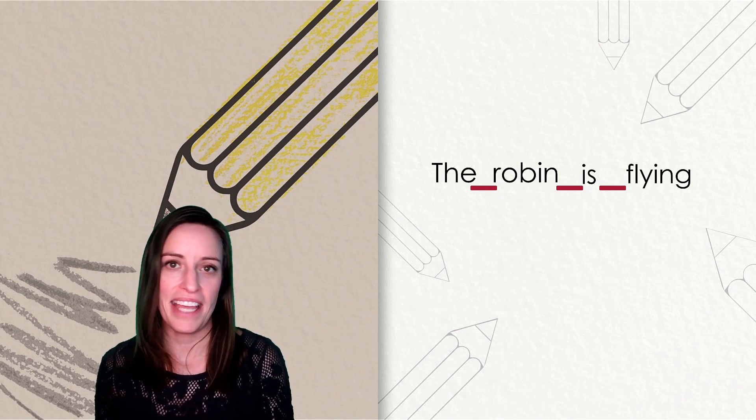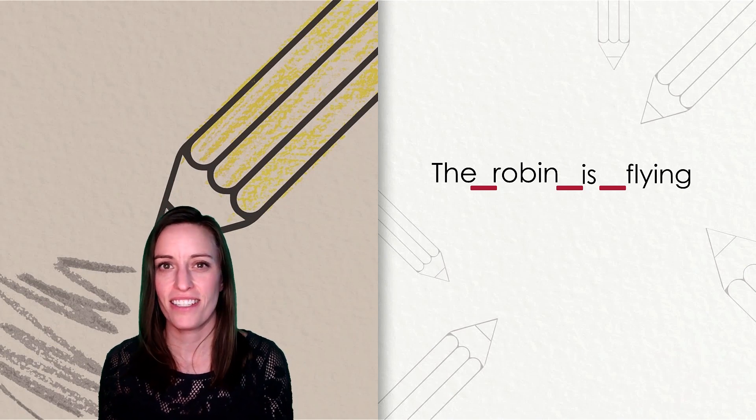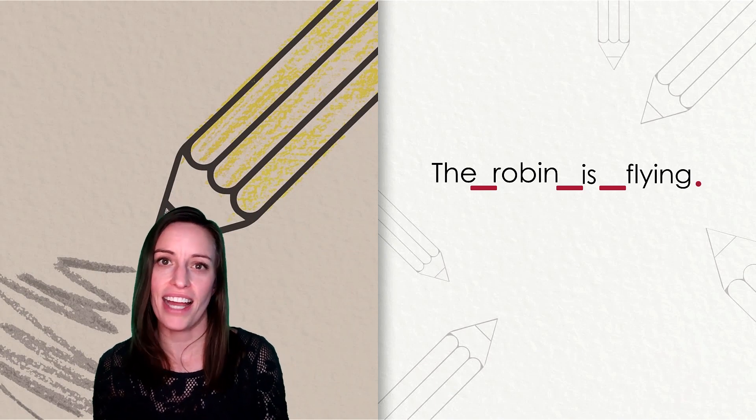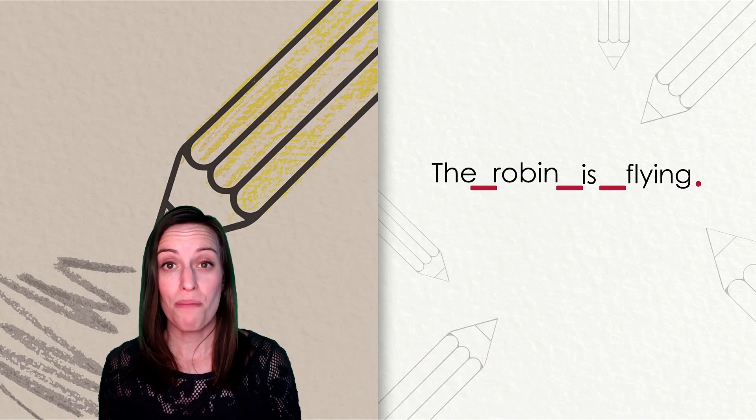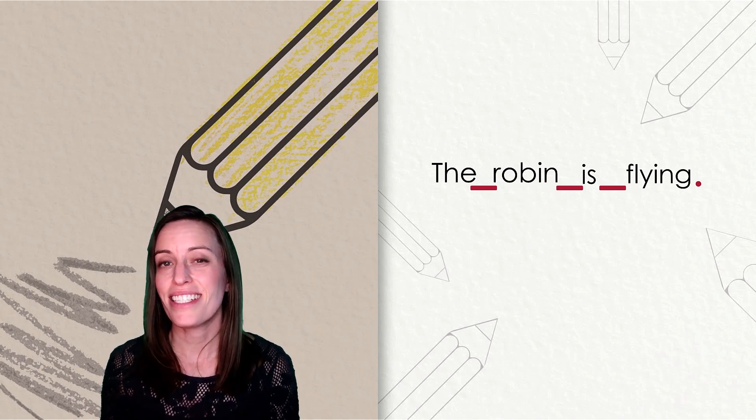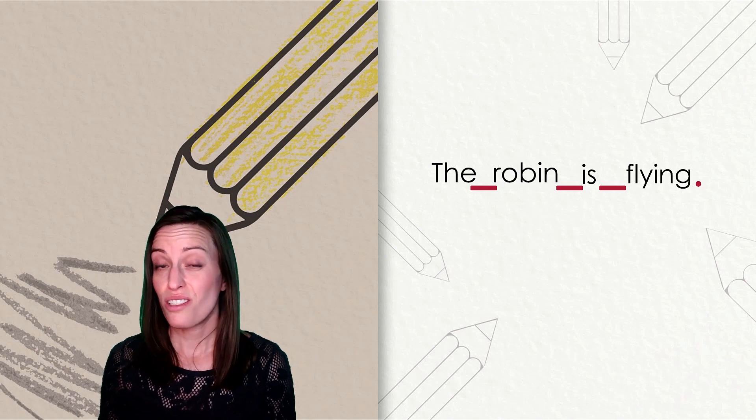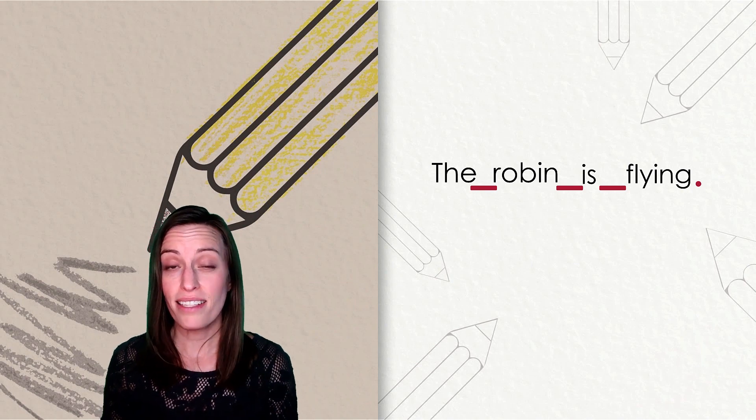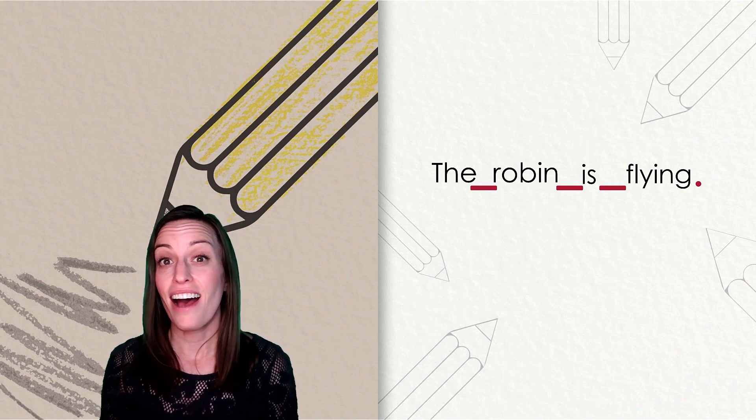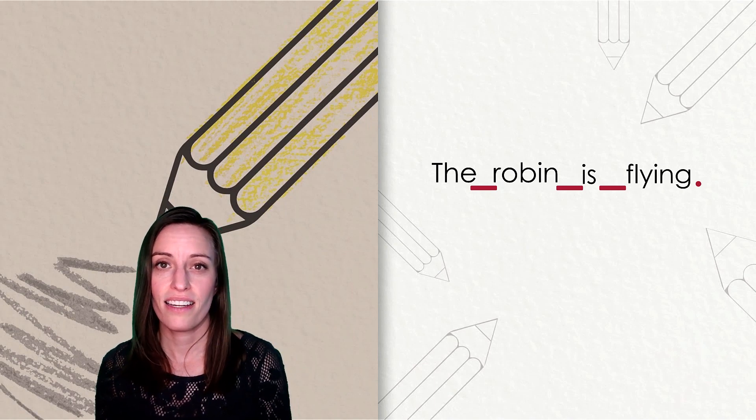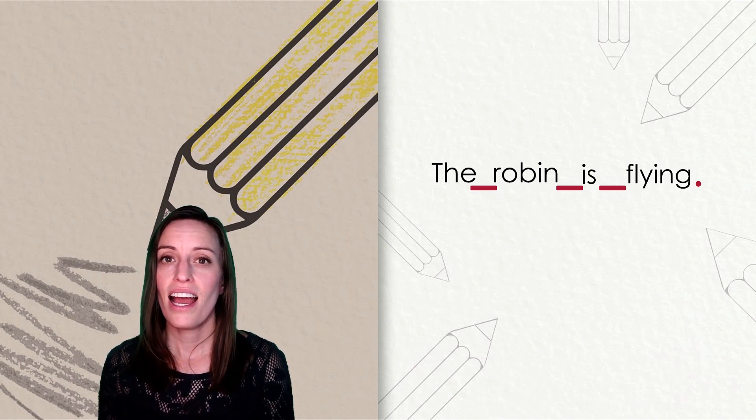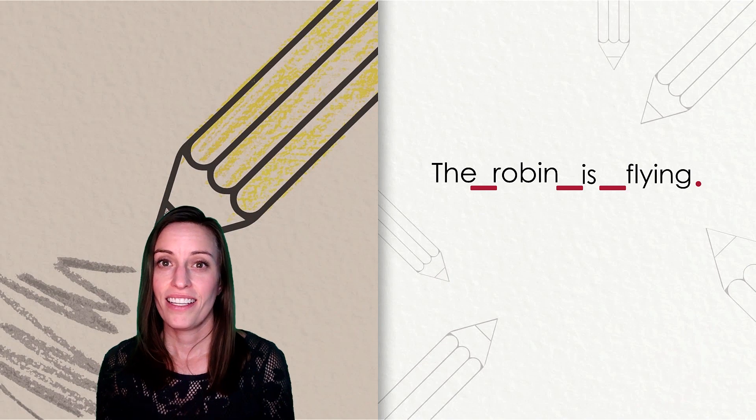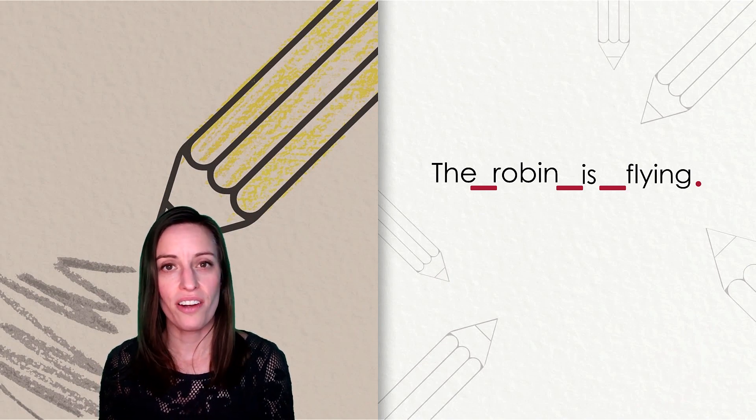And then finally, what do we need to put at the end of our sentence to show the reader we're finished? A period. It rests right on the line. Go ahead and pick up your pencil so you can write the second half of your sentence. So far you have the robin. You can leave a space and then write the high frequency word is. I-S. Then leave another finger space.